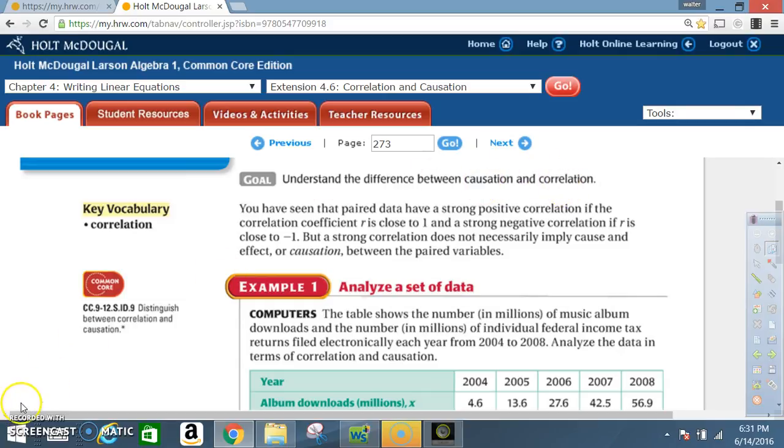You have seen that paired data have a strong positive correlation if the correlation coefficient r is close to 1, and a strong negative correlation if r is close to negative 1. But a strong correlation does not necessarily imply cause and effect or causation between the paired variables.